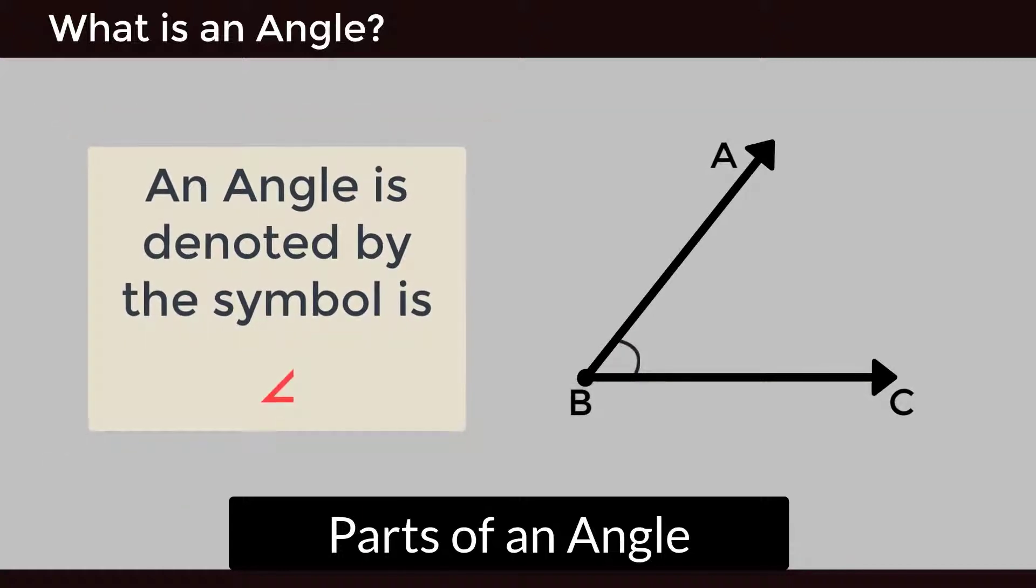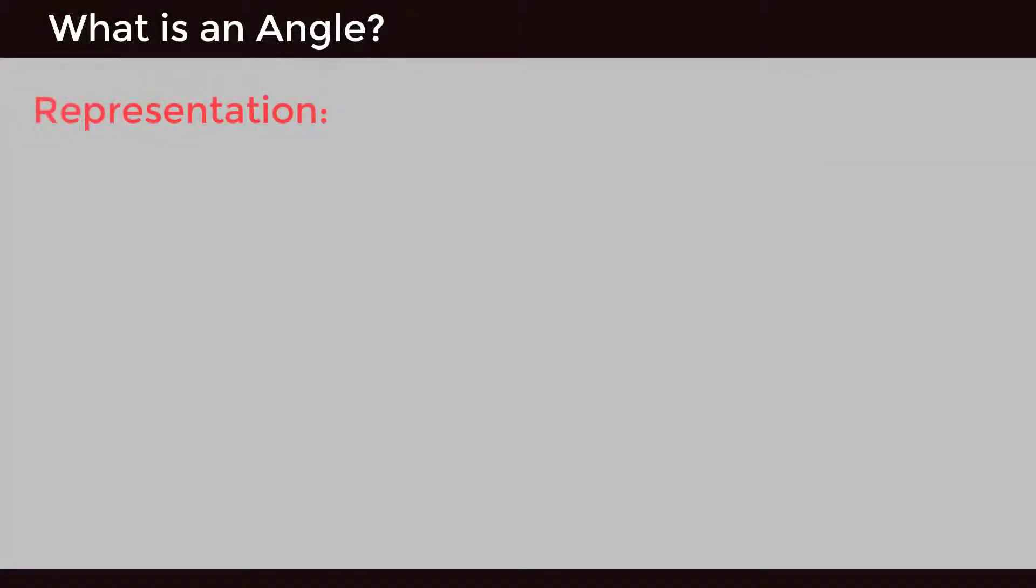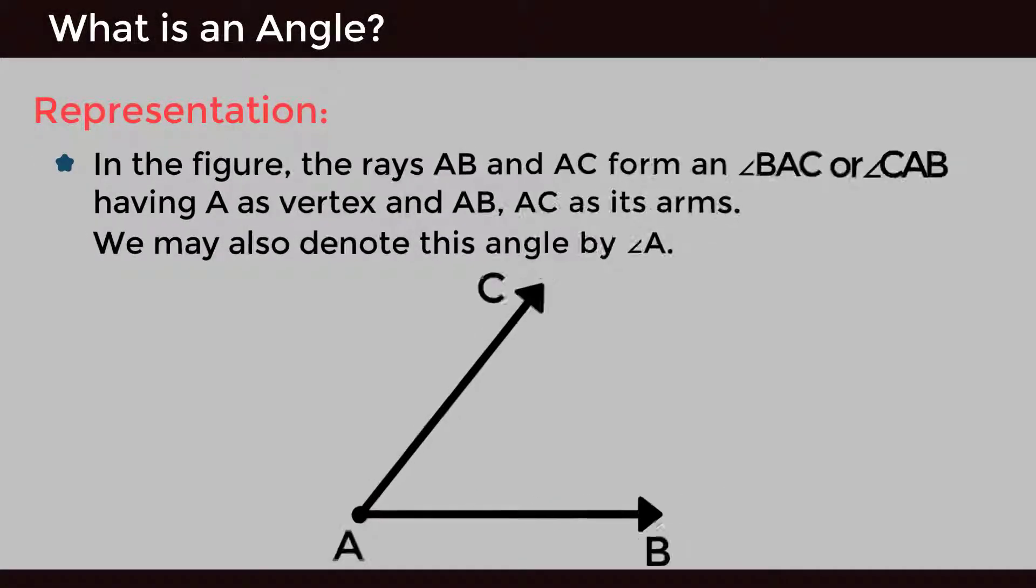An angle is denoted by the symbol ∠. Representation: In the figure, the rays AB and AC form angle BAC or angle CAB, having A as vertex and AB, AC as its arms. We may also denote this angle by angle A.